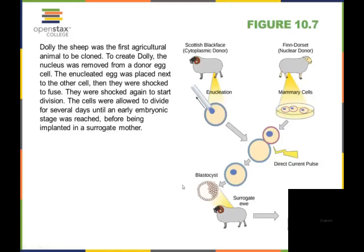The nucleated egg was placed into the other cell. When they were shocked, they fused. They were shocked again to start division. The cells were allowed to reach the early embryonic stage before being implanted into the surrogate mother.